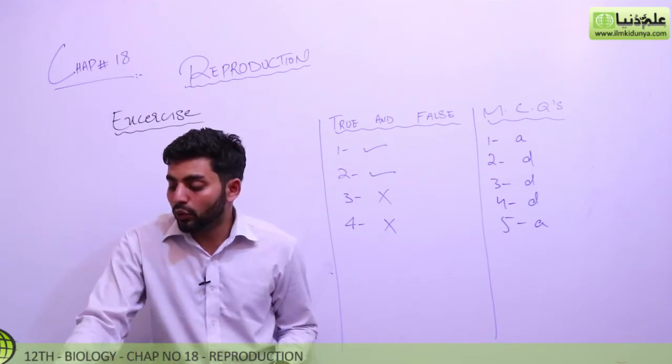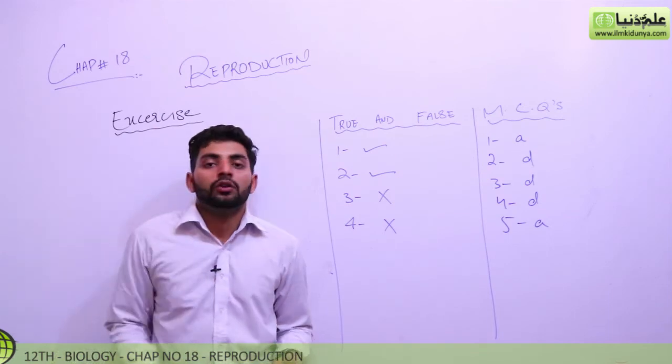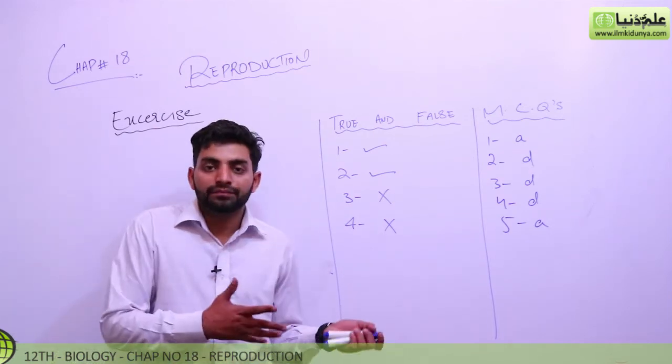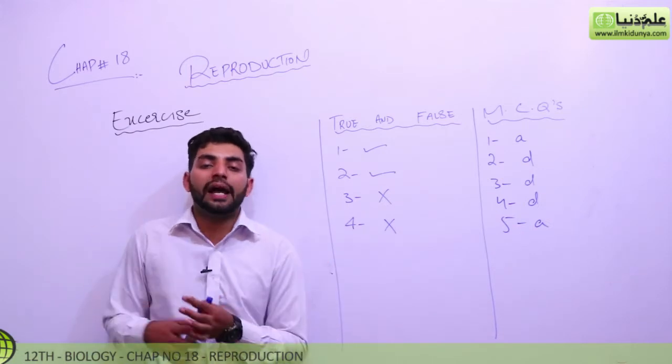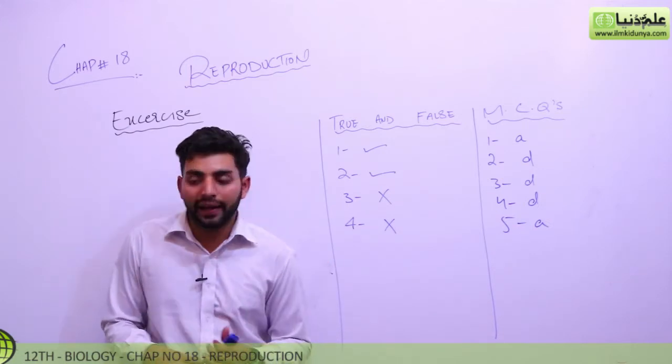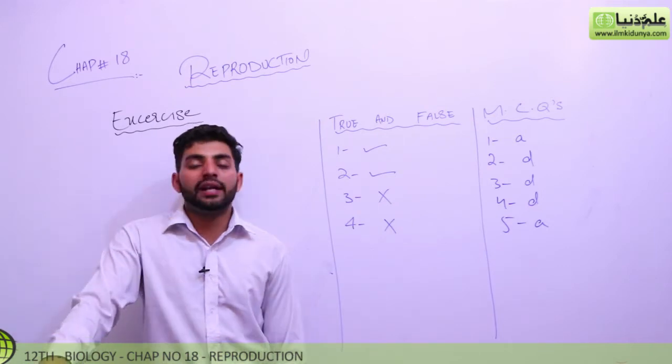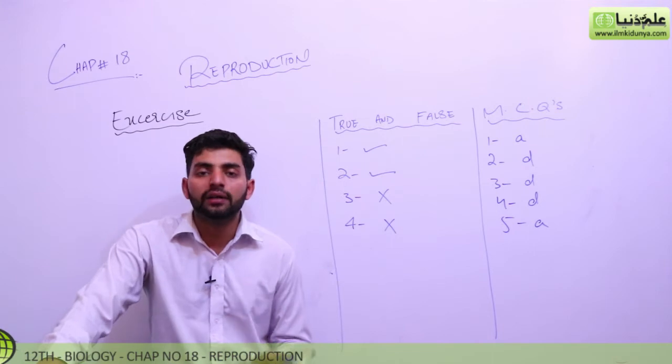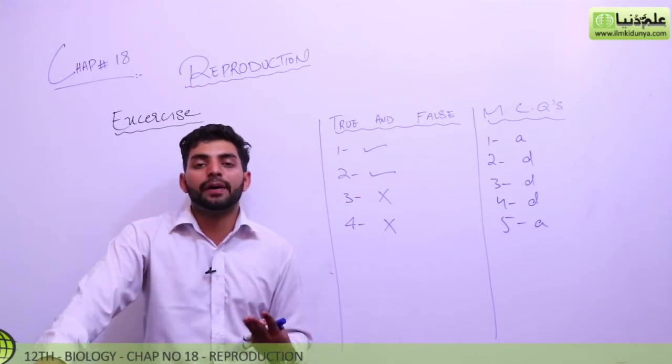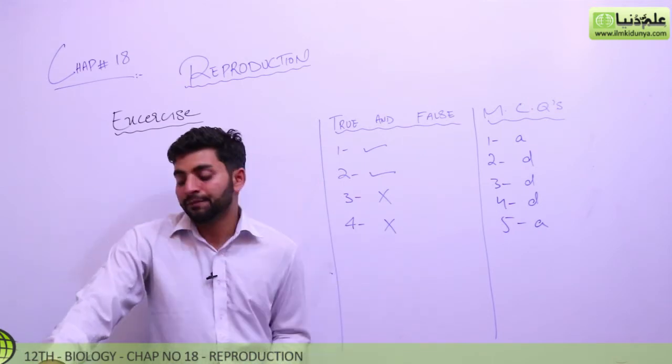Then what is the difference between oogenesis and spermatogenesis in human? In oogenesis, the production of eggs occurs and then the ova will form. What happens in spermatogenesis? The primary spermatocyte, secondary spermatocyte, and the spermatids, and ultimately spermatozoa.